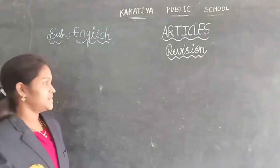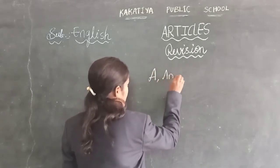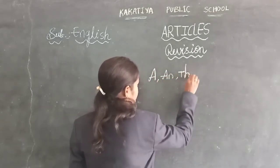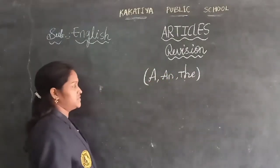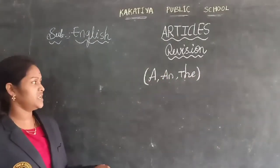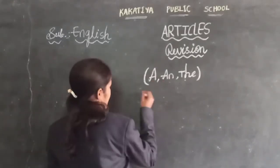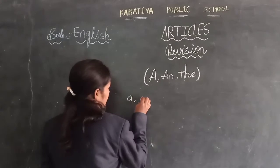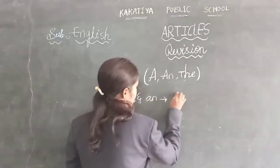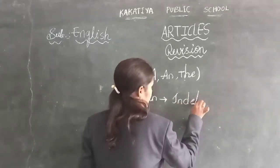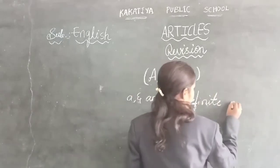There are total three articles: A, An, and The. A as well as An are called indefinite articles. Where we have to use A and where we have to use An — with vowels or with consonants — we will discuss.